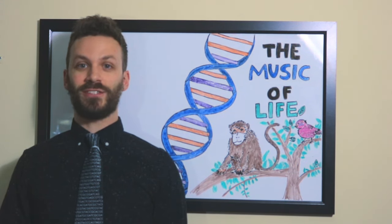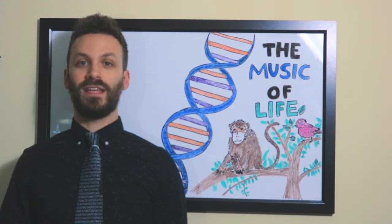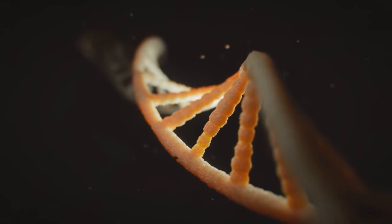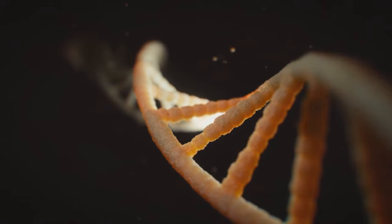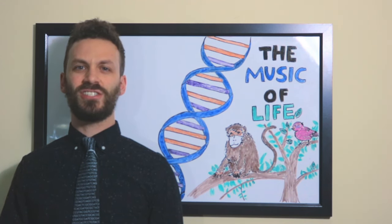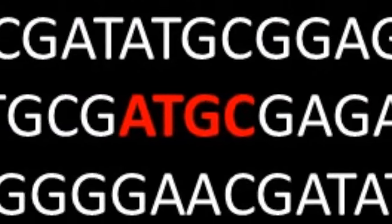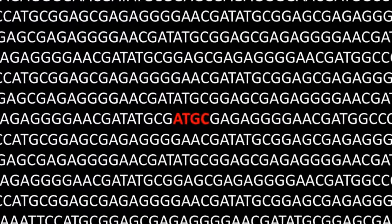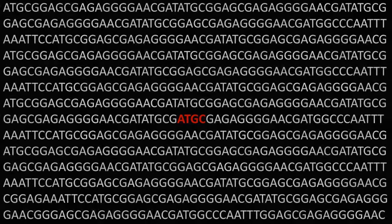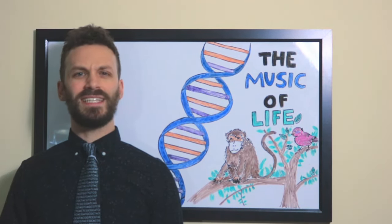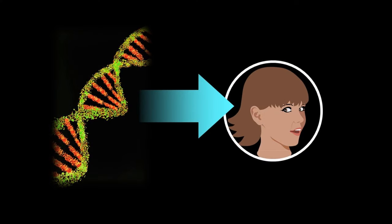When a human genome was first sequenced in 2003, it became possible to read the order of nucleotides that make up deoxyribonucleic acid, or DNA. The four-letter alphabet of A's, C's, G's, and T's stored in DNA provides the instruction manual for how to make a living thing. But instead of reading these letters, what would it be like to hear the code found in DNA?